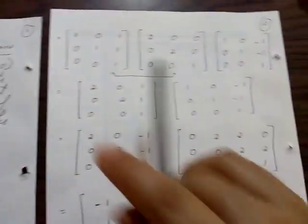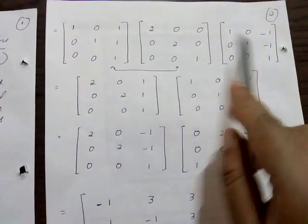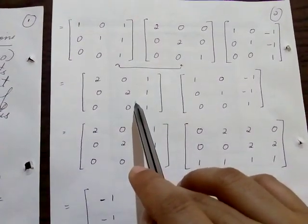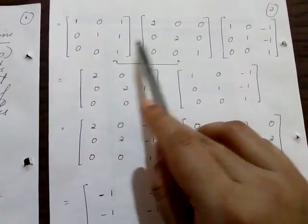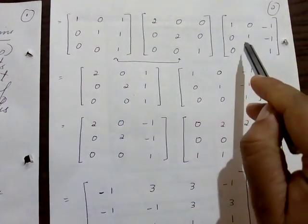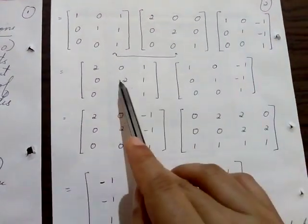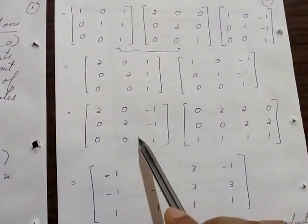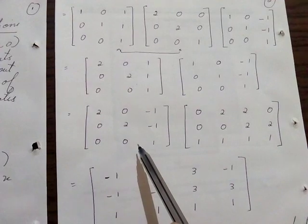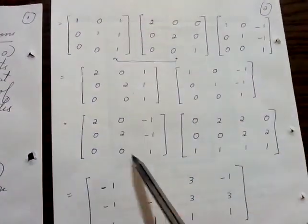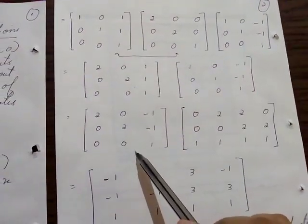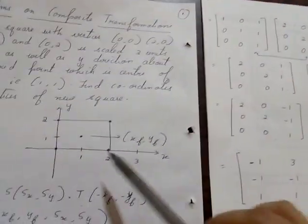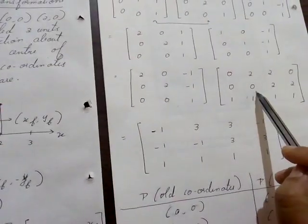When given three matrices, first perform the multiplication of the first two matrices to get a resultant matrix. Then multiply that resultant matrix with the third matrix to get the final composite resultant matrix. This resultant matrix is the multiplication of all three combined. Then you multiply this resultant matrix with the object matrix — that means the coordinates of the object.